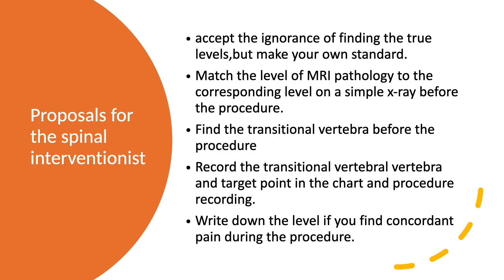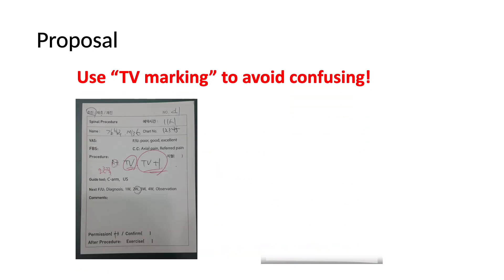Here are my suggestions. Please accept the ignorance of finding the true levels, but make your own standard. For example, I count down the level from the T12 ribs. Match the level of MRI pathology to the corresponding level on a simple x-ray before the procedure. Find and mark the transitional vertebra before the procedure. Please record the transitional vertebra and target point in the chart and procedure recordings. Write down the level if you find concordant pain during the procedure. This is one sample of my procedure order.